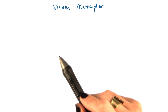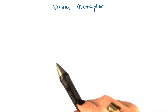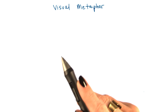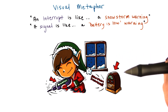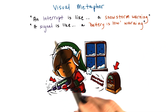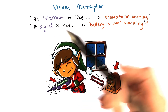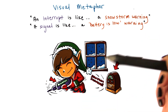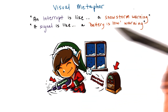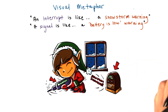Now that we have compared and contrasted interrupts and signals, let's see how we can visualize these concepts. We'll use again an illustration within a toy shop where we will try to make an analogy between an interrupt and a snowstorm warning, and a signal and a battery slow warning.